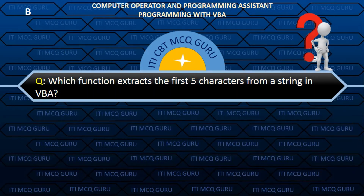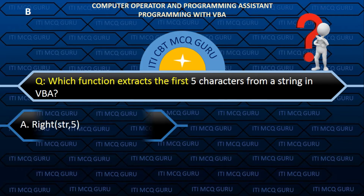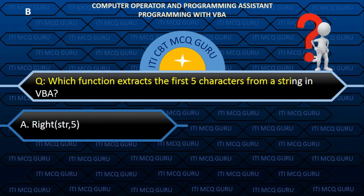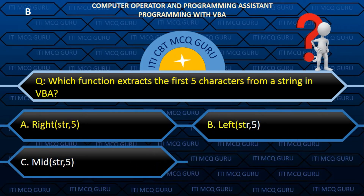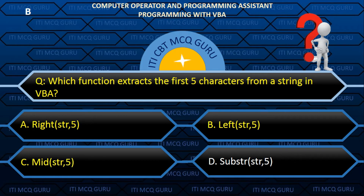Which function extracts the first 5 characters from a string in VBA? Answer: B. LEFT.